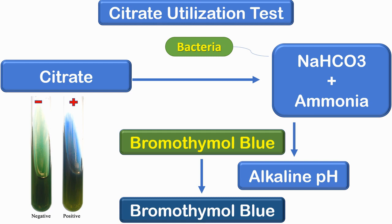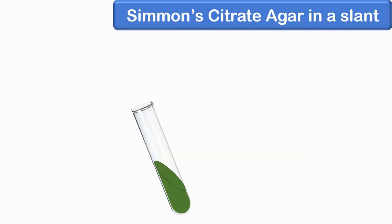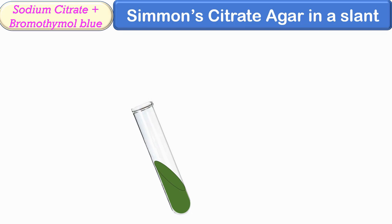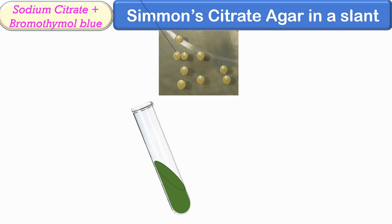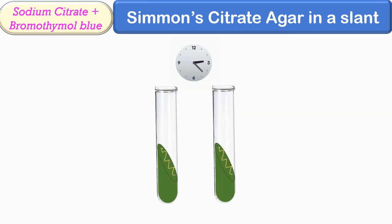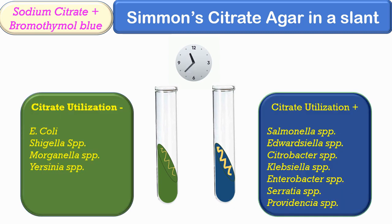Bromothymol blue indicator in the medium changes its color from dark green to blue at an alkaline pH, indicating citrate utilization. To perform the test, we take a test tube containing Simmons citrate agar on a slant. This agar contains sodium citrate and the indicator bromothymol blue, which appears dark green at neutral pH. The slant is inoculated with the test bacterial colony and incubated at 37 degrees Celsius for 24 to 48 hours. A blue color after incubation indicates a positive result; no growth and no color change indicates a negative result.